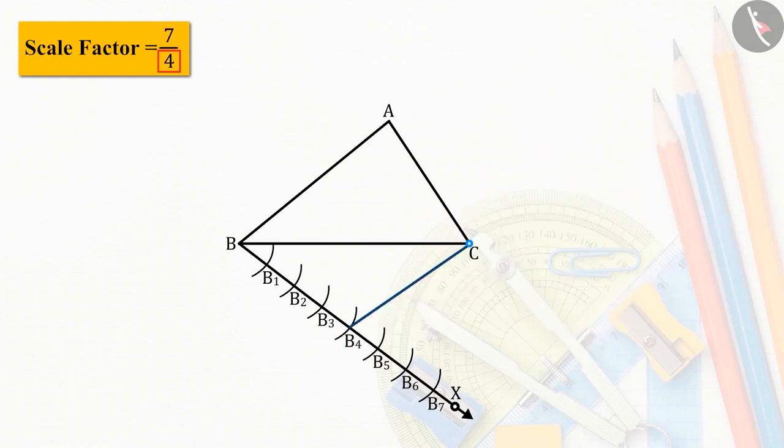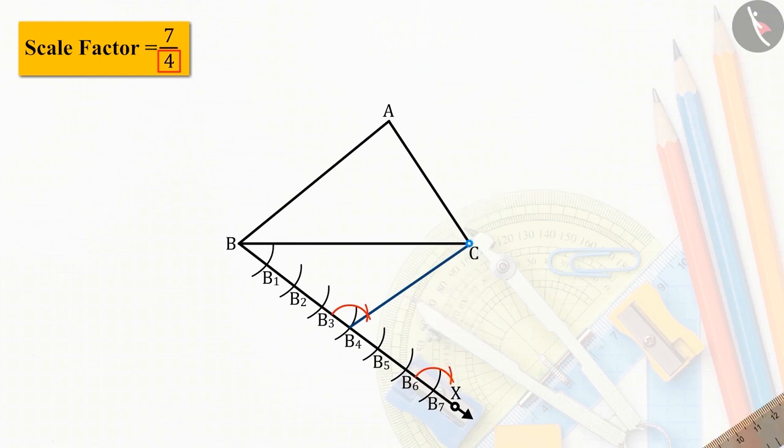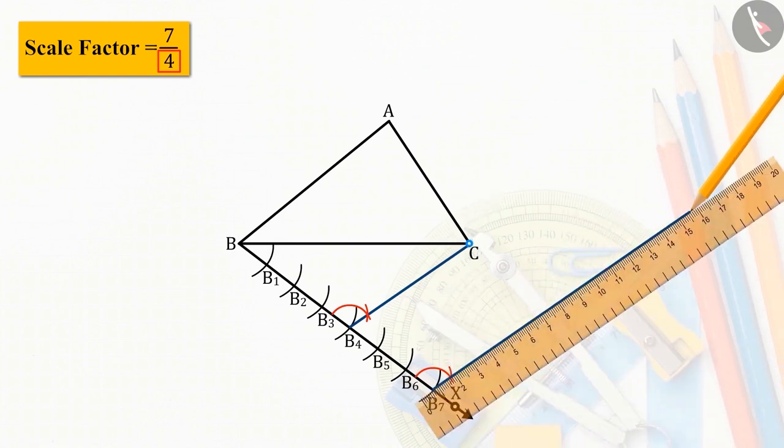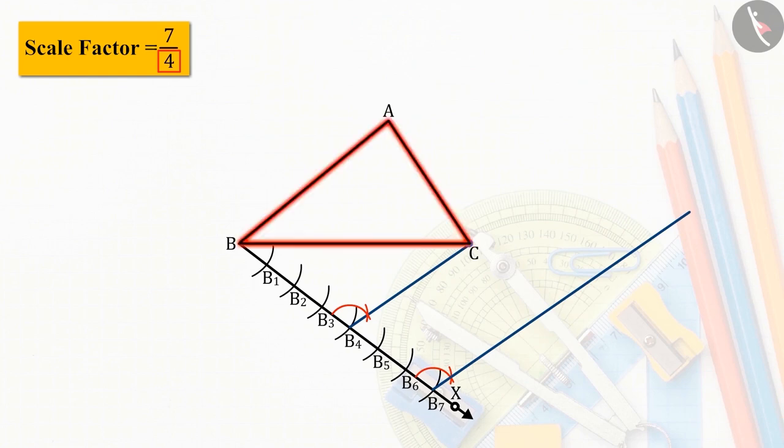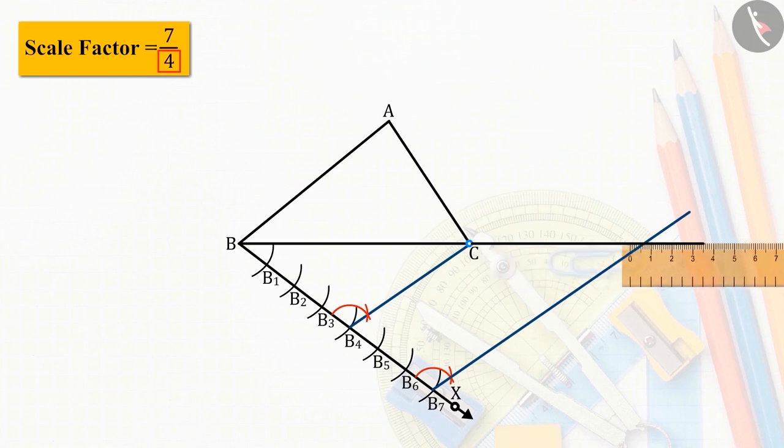From point B7, draw to the line CB4, a parallel line. And triangle ABC's side BC is extended. The line drawn from point B7 is intersected at point D.